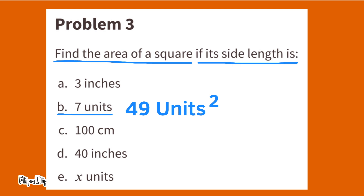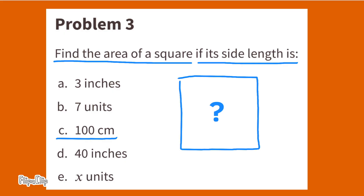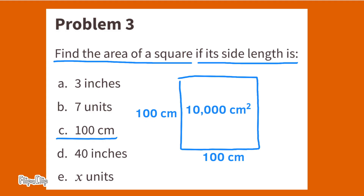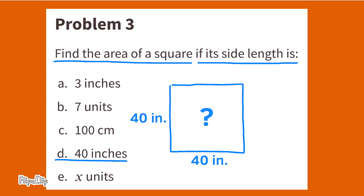Find the area of a square if its side length is 100 centimeters. A side length of 100 centimeters times a side length of 100 centimeters would equal 10,000 centimeters squared, so the area would be 10,000 centimeters squared. Find the area of a square if its side length is 40 inches. A 40-inch side length times a 40-inch side length equals 1,600 square inches.